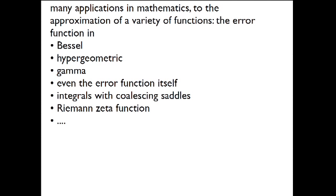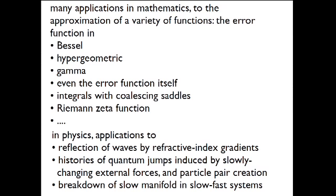Now, that's the error function and the Airy function. But there are many applications of this. The error function occurs in Bessel functions, hypergeometric, gamma functions, wherever you've got a Stokes line. Even in the error function itself, integrals with coalescing saddles, Riemann Zeta function. And in physics, it applies to reflection of waves by refractive index gradients, histories of quantum jumps. I'll show you in a second. Particle pair creation. There are papers about that, where the Stokes phenomenon occurs and this behavior in nuclear breakdown of slow manifolds in systems that are slow and fast. There are many examples. I'll just show you one before I get on to the deeper stuff.